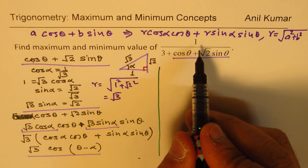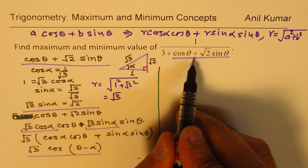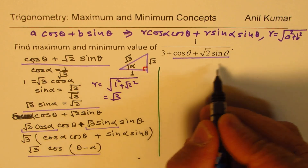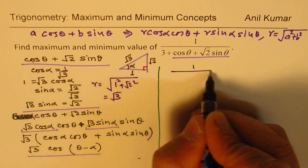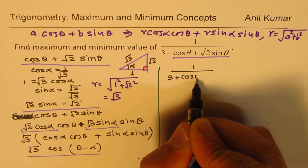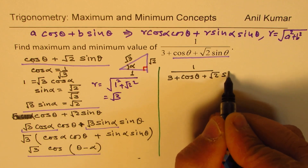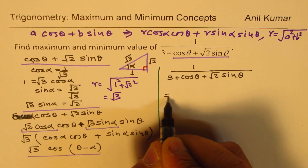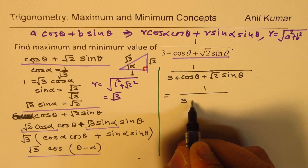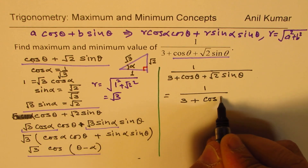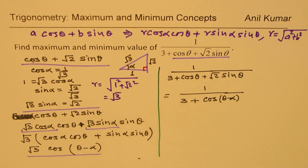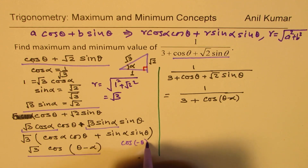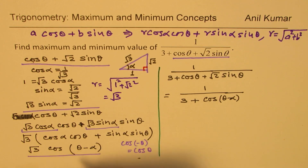Now let's look at our function: 1 over 3 plus cos θ + √2 sin θ. We can rewrite this as 1 over (3 + √3 cos(θ − α)). Some of you might think it should be α − θ, but remember cos(−θ) = cos θ, so interchanging doesn't matter.